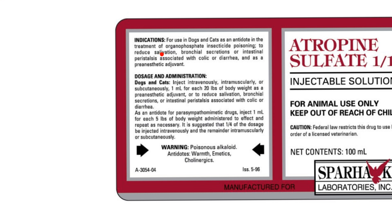It can also reduce salivation — that means the parasympathetic nervous system must increase salivation when activated, so atropine fights against that. It also reduces bronchial secretions in the airways and reduces intestinal peristalsis. As a pre-anesthetic adjuvant, it has some interesting uses in animals, all because of the way it interacts with the nervous system.